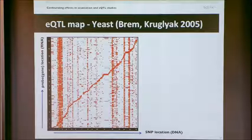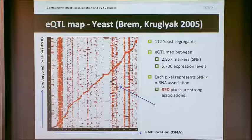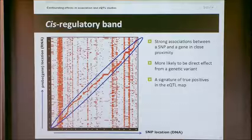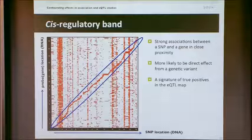This is a classic eQTL dataset collected by Leonid Kruglyak — about 3,000 markers and 6,000 expression probes. Looking at it you see some really obvious structures. One obvious structure is a diagonal band — what we call the cis-eQTL band — SNPs affecting the expression of genes that they're in or near. We expect that because these could be SNPs in promoters, etc. This gives us a measure of true positives; if you don't see a cis band in your analysis, something went horribly wrong — maybe your sample IDs are off.